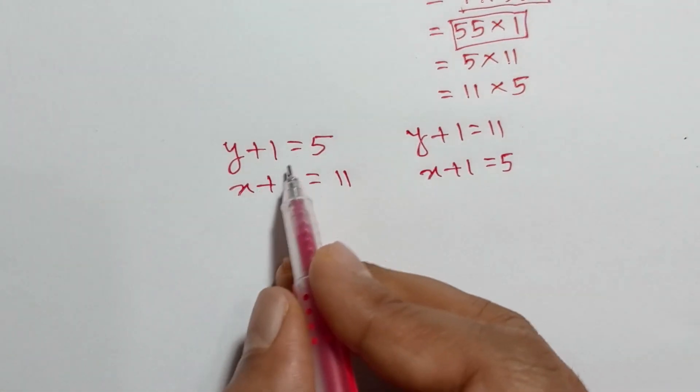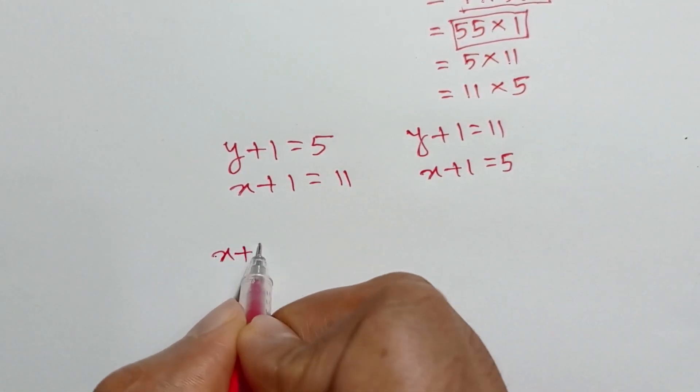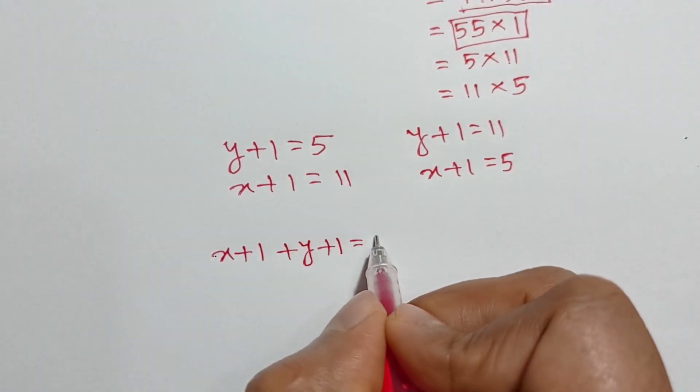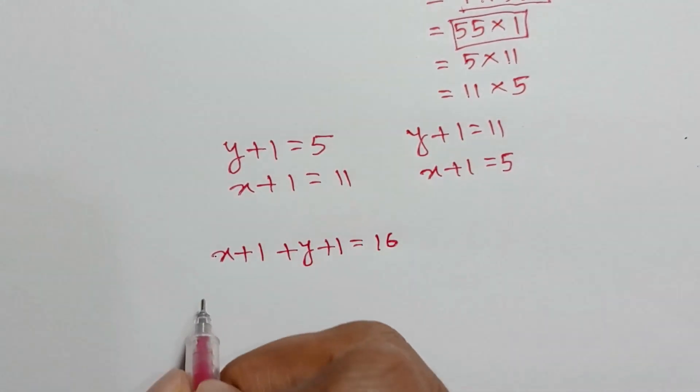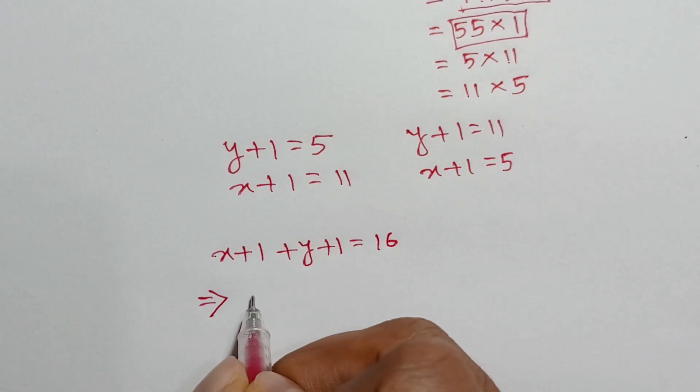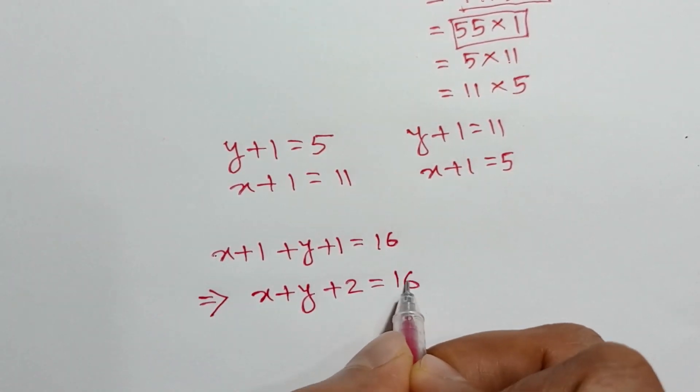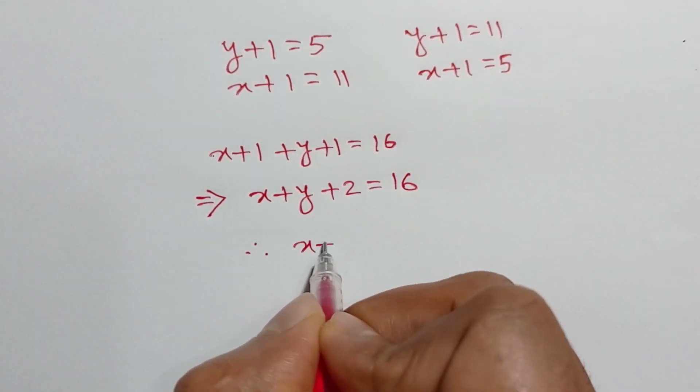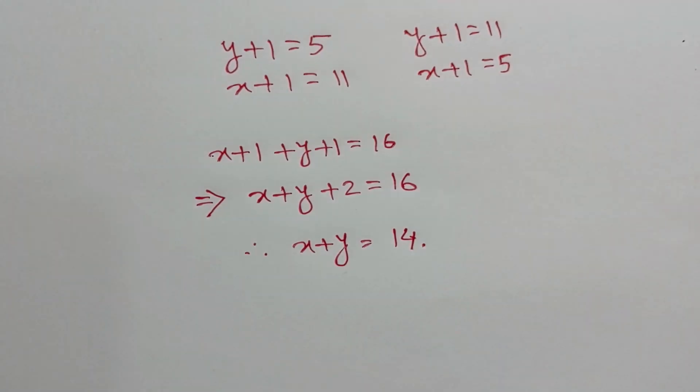If we add these two or these two, we get x plus 1 plus y plus 1 is equal to 5 plus 11 is equal to 16, or x plus y plus 2 is equal to 16. So the value of x plus y is equal to 16 minus 2 is equal to 14. This is the value of x plus y. Thanks for watching.